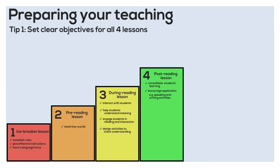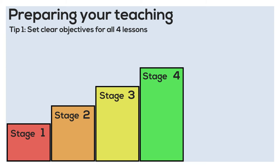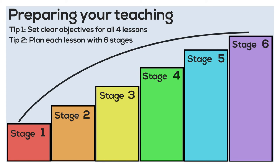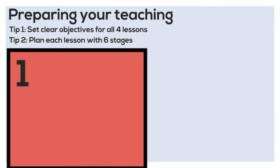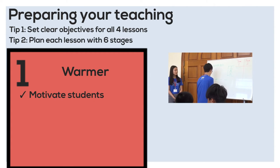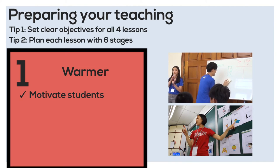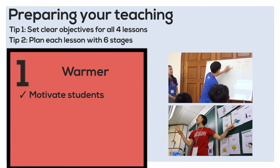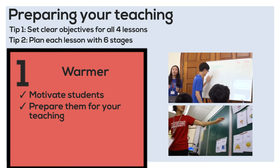Having determined the objectives for each of your lessons, your next step is to design activities for each lesson. There should be six stages in the pre-reading, during reading, and post-reading lessons. The first stage is called the warmer. You should aim to motivate students at the very beginning of every lesson. Be it a game or an interactive review of the previous lesson, you need to motivate and prepare them for your teaching.